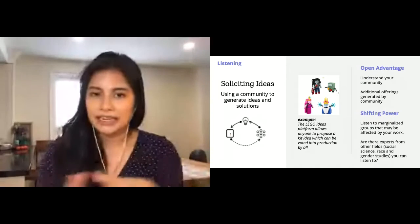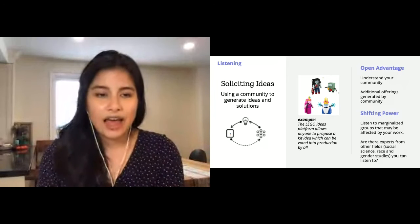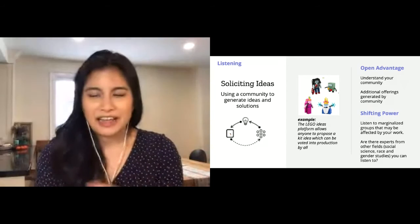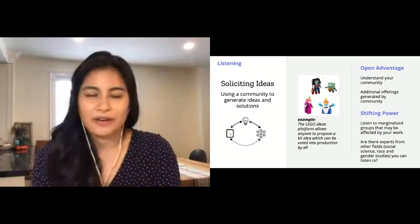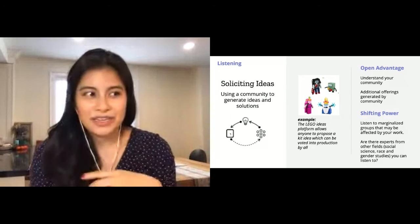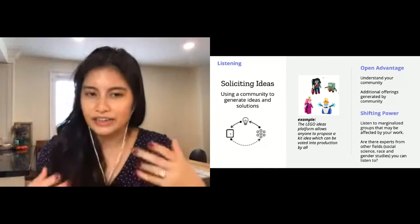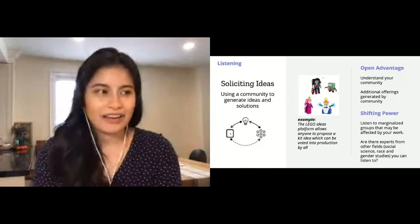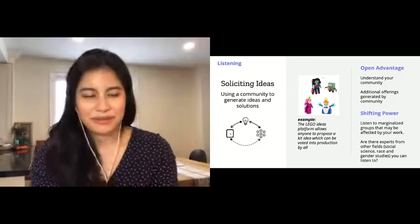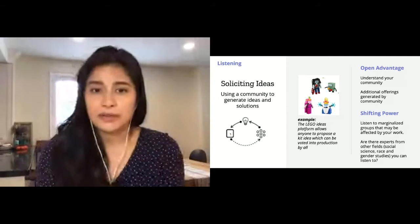The next two are about listening. This first one is more active listening—soliciting ideas. It's about using a community to generate ideas and solutions. The example from the study is the Lego Ideas platform, which I didn't know about before, but apparently you can propose any type of Lego kit that you want Lego to make, and if enough people vote for it they'll actually make that kit, which is really cool. Open advantages: you understand your community better.